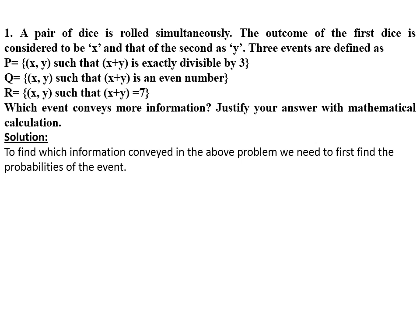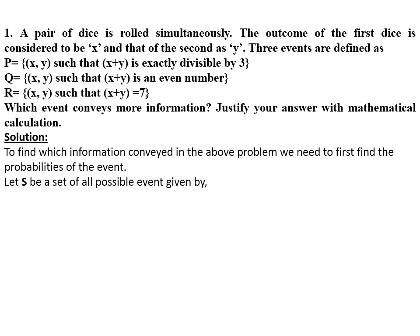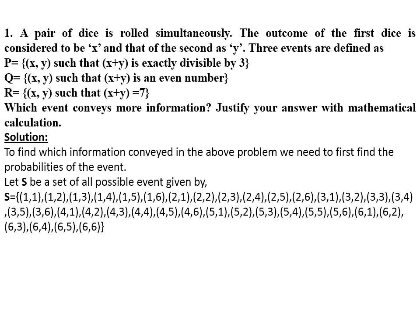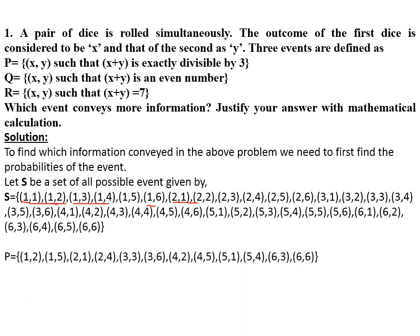To find the information conveyed, we first need to find the probabilities of each event. Let S be the set of all possible events. Since a pair of dice are tossed giving outcomes x and y, the possible events are (1,1), (1,2), (1,3), (1,4), (1,5), (1,6), (2,1), (2,2), (2,3), (2,4), (2,5), (2,6), (3,1), (3,2), (3,3), (3,4), and so on. The total possible outcomes for two dice is 36.